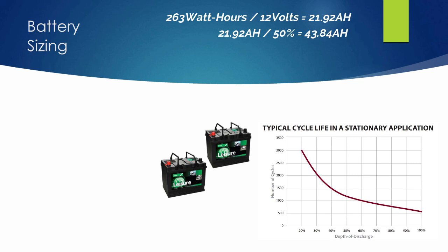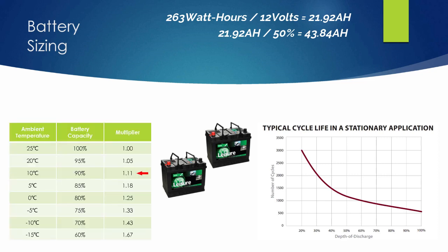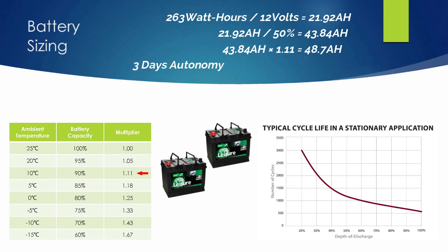One more thing to consider is the ambient temperature the battery will be stored in, as it does affect battery output. From the table, at 10 degrees Celsius the multiplying factor is 1.11. So we take our 43.84 amp hours multiplied by 1.11 to get 48.7 amp hours for one day. If we didn't have sunshine for a couple of days due to cloudy weather, we'd want a couple of days of autonomy. Multiplying 48.7 amp hours by 3 days gives a total of 146.1 amp hours — so a 150 amp hour battery will be plenty for this single 120 watt panel.